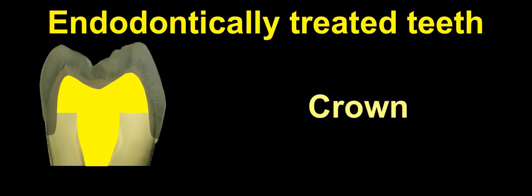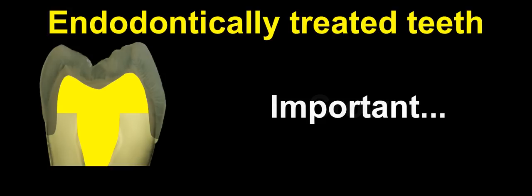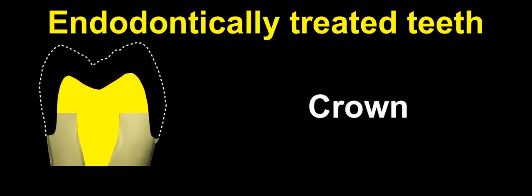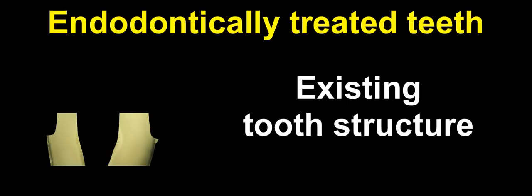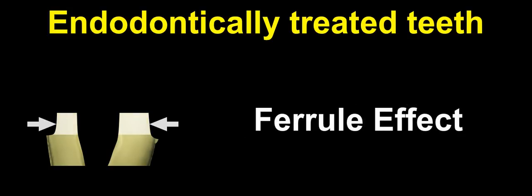Endodontically treated teeth are associated with problems in different parts of the world, and in order to find out what causes the problem, a lot of research has been done on what's the best form of crown, or what is the best post and core system to use — metal, cast, glass fiber, carbon fiber, composite resin? To my mind, the most important is the existing tooth structure. The more tooth structure we have, the less problems we have, and especially we need tooth structure in the cervical area. This is associated with the term ferrule effect.